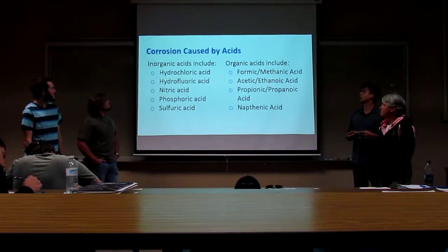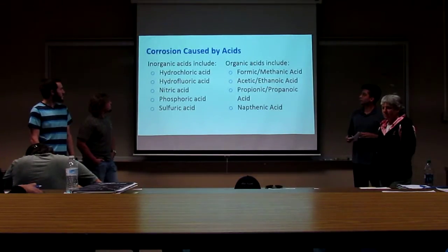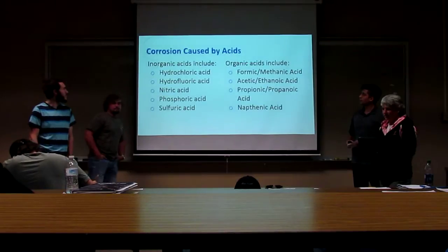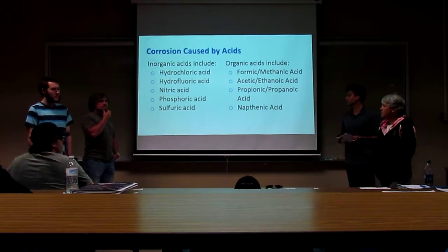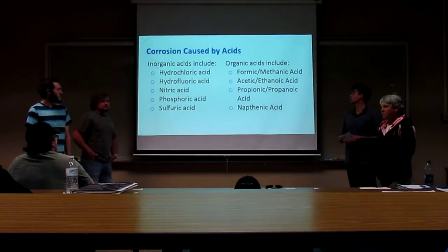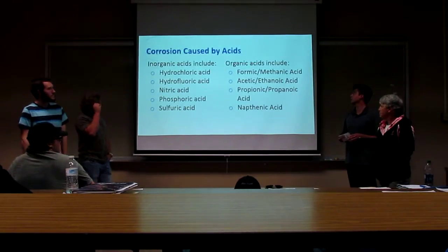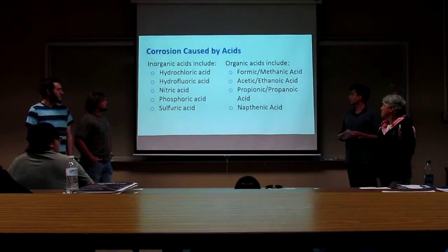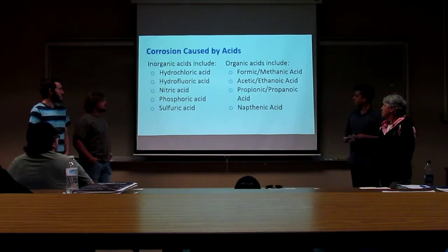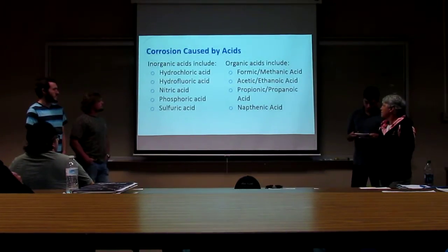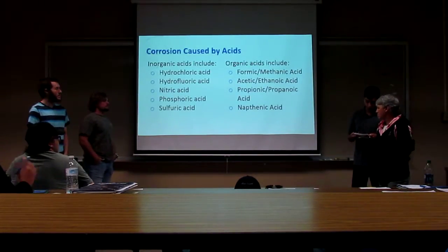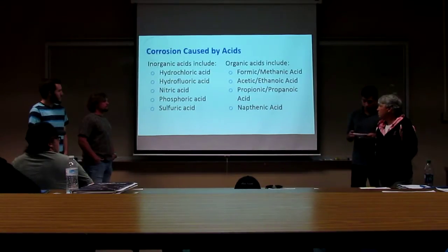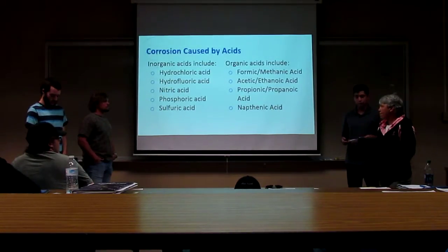There are two types of acids that cause corrosion. Inorganic acids include hydrochloric acid, hydrofluoric acid, nitric acid, phosphoric acid, and sulfuric acid. And just organic forms — that's formic or methanic acid, acetic, propionic, and naphthenic. Acid corrosion is a huge issue because the bulk of metals exposed in industry are more susceptible to severe attack in the acidic pH range rather than the alkaline range.